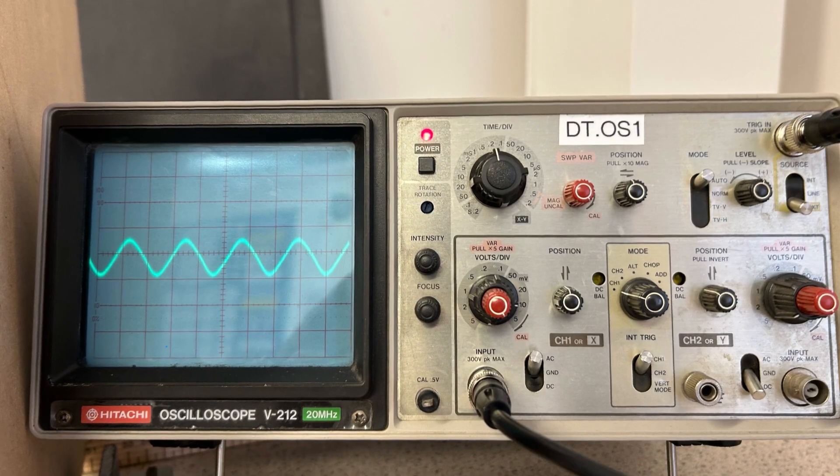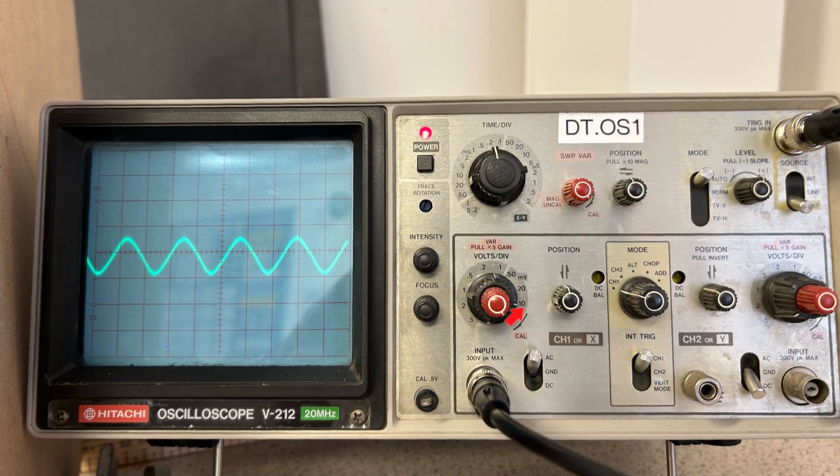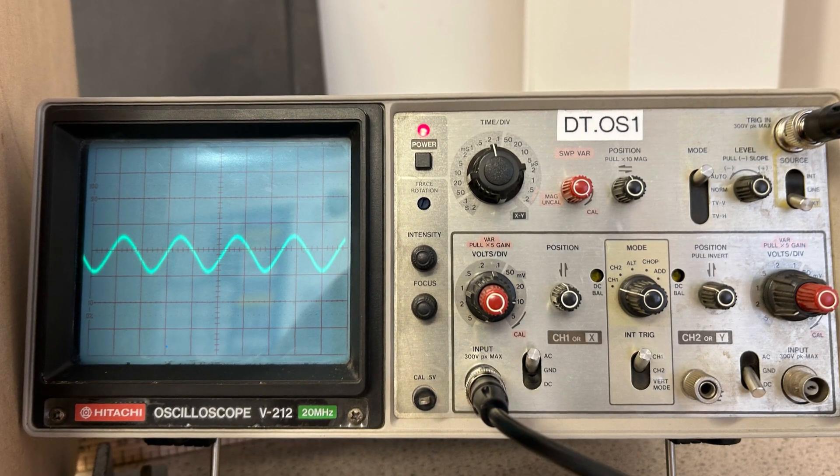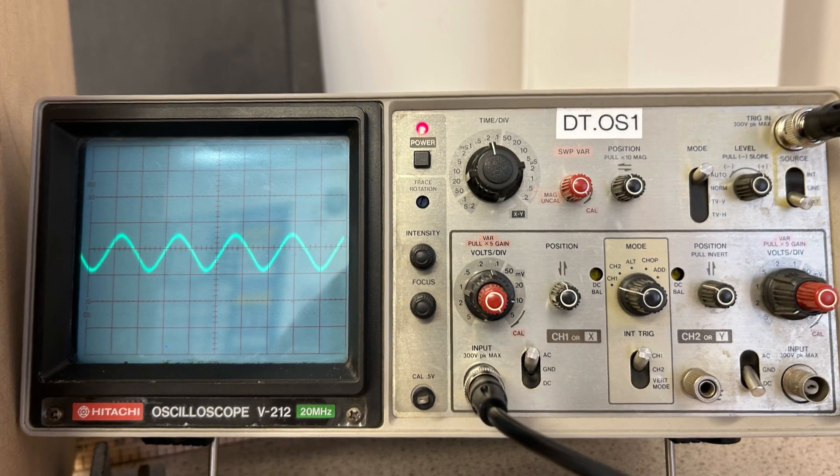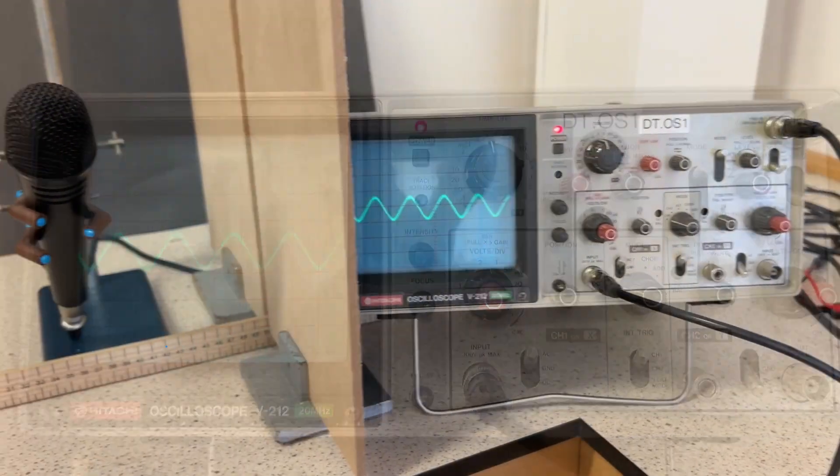You'll need the volts per division on your oscilloscope set to be very sensitive, and on this oscilloscope that I'm using, you can pull that out and get times 5.